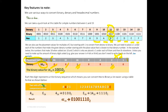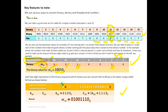Now, converting hexadecimal values to binary: the best way is to put it in a table. Remember, each hexadecimal value represents four bits — four binary digits — for one hexadecimal value.